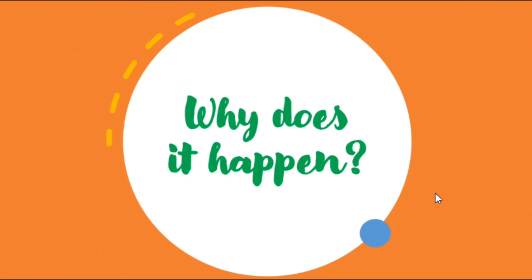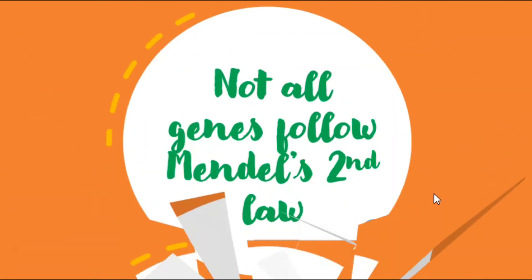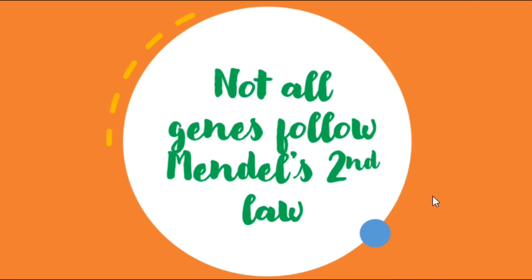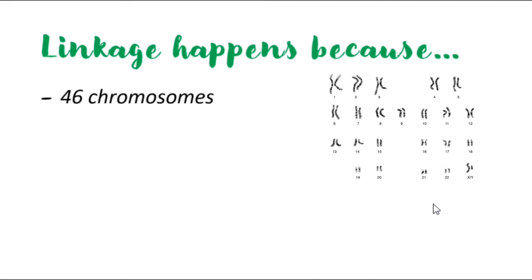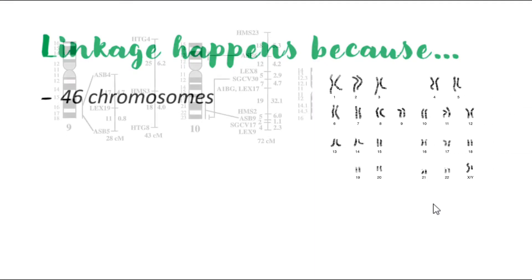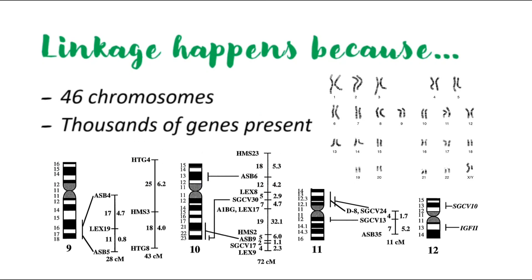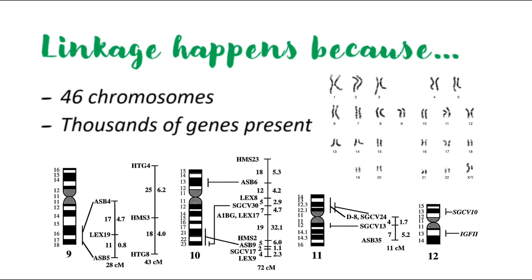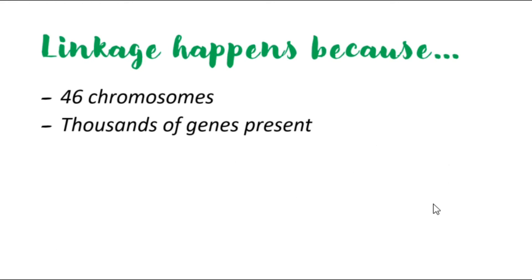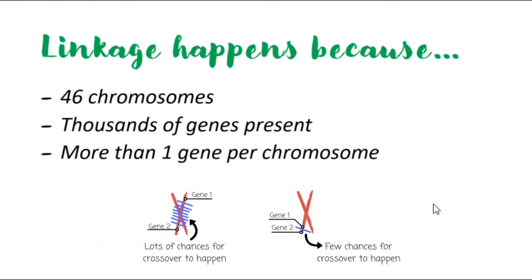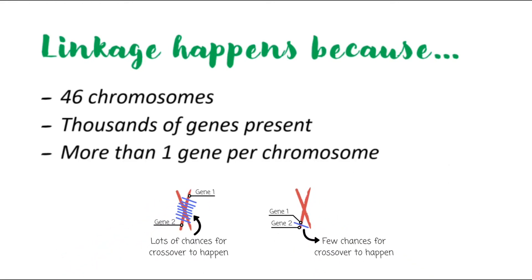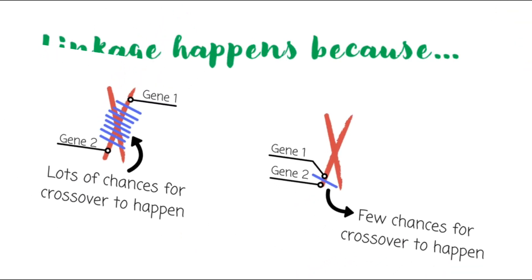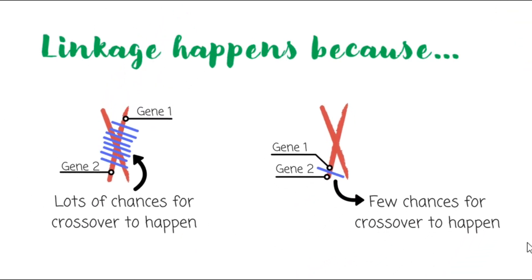Now you might be wondering why linkage happens — why not all assortment of genes follows Mendel's principles. Linkage happens because we only have 46 chromosomes in each of our cells, and we have hundreds or even thousands of thousands of genes. To accommodate this great number of genes, each chromosome contains more than one gene, making linkage possible especially when two or more genes are located very close to each other.